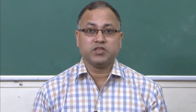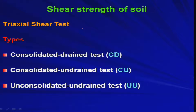Welcome back to the course Geology and Soil Mechanics. In the last lecture we started the discussion on triaxial shear test, which is another laboratory test by which you can determine the shear strength parameters for a particular soil. There are three different kinds of triaxial test: one is a Consolidated Drained test (CD test), one is a Consolidated Undrained test (CU test), and another one is an Unconsolidated Undrained test (UU test).